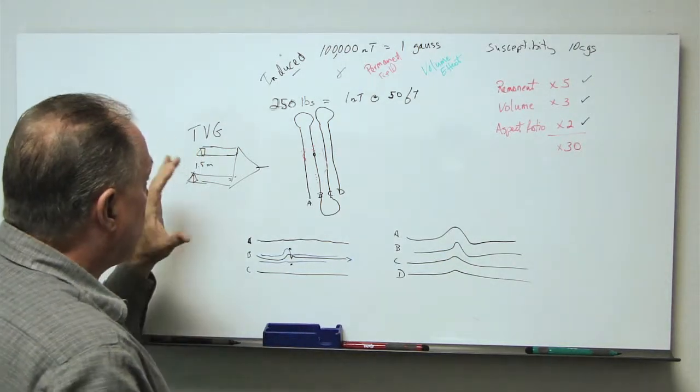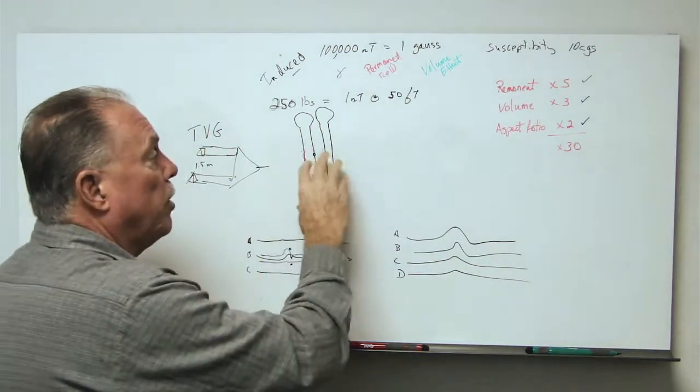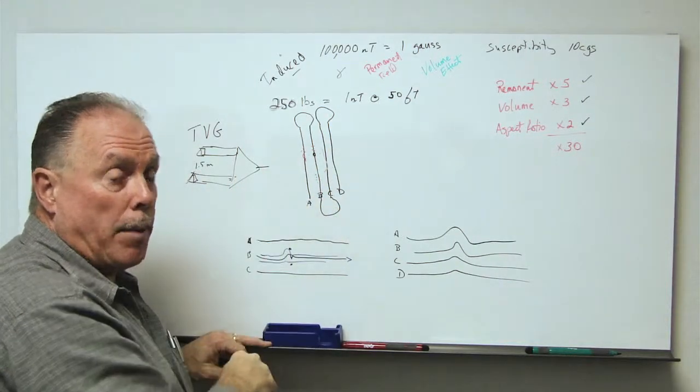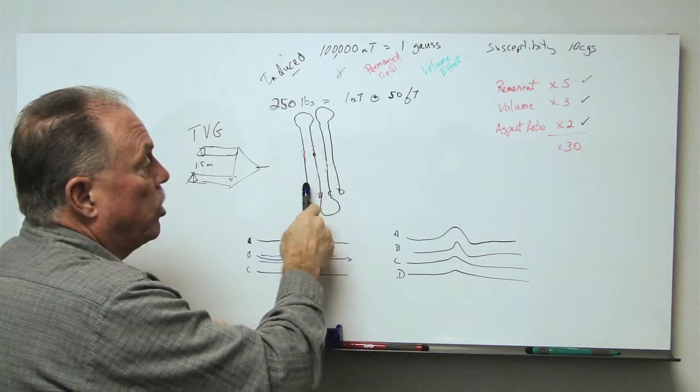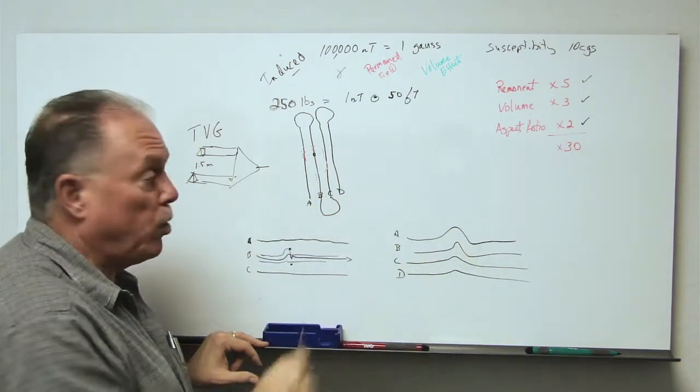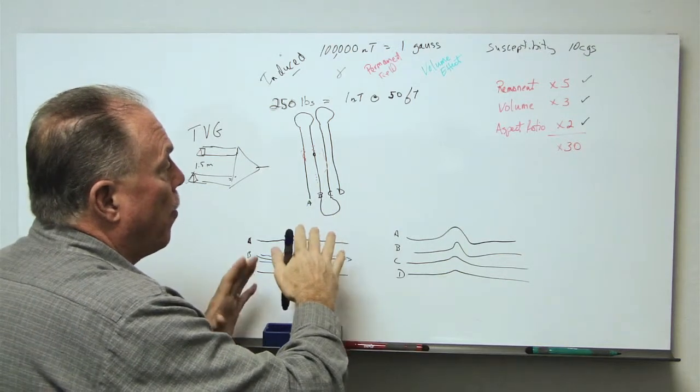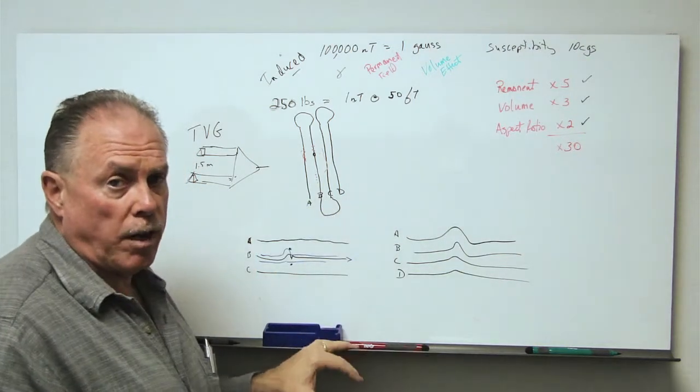So, the transverse gradiometer gives us the ability to better place anomalies on the map. It also gives us the ability to see a little further out between the lines, so that we are able to make more efficient use of our survey time.